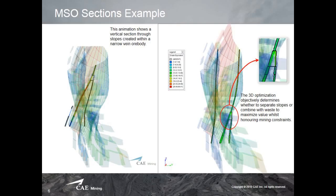If the ore body has two or more different veins, MSO actually calculates whether it's better to create just one stope that combines both veins, as you can see on screen. In this case, the ore body splits into a smaller ore body, and MSO calculates whether it's better to keep the stopes separately or combine them into just one stope.